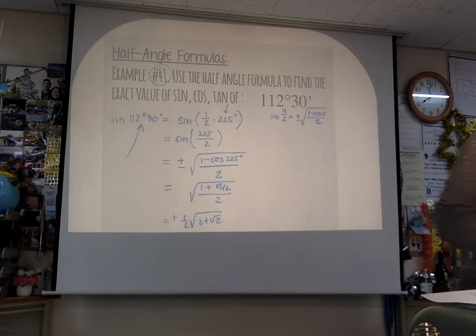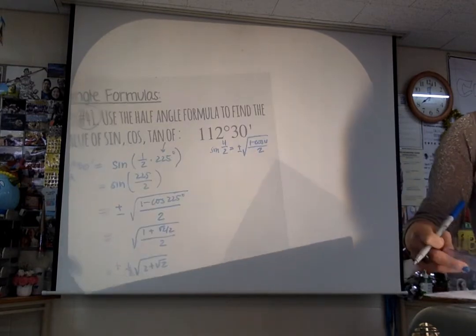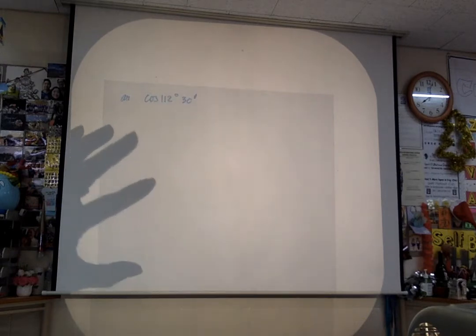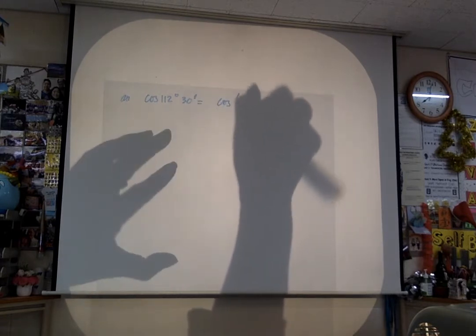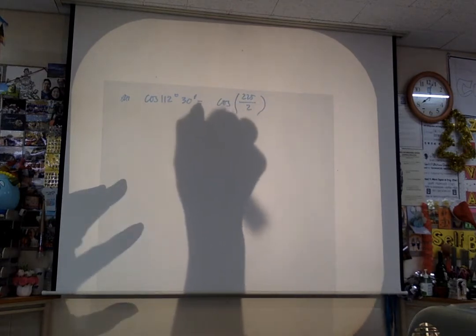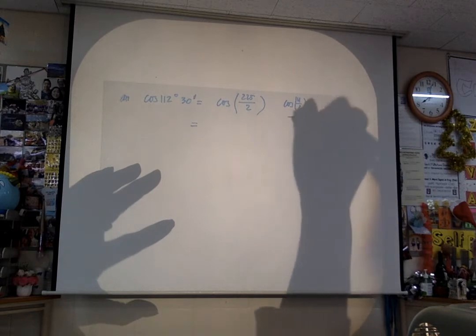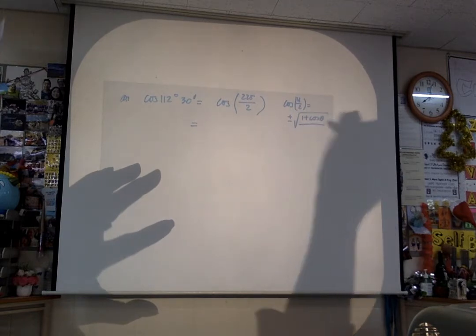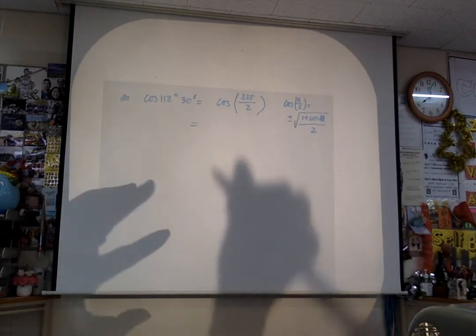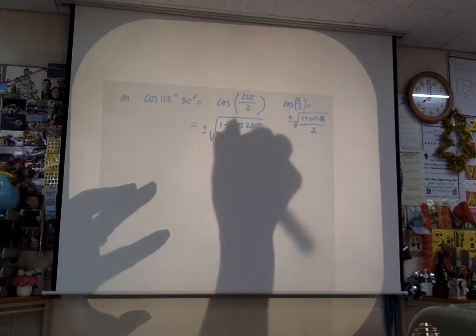Now stop the video and try cosine and tangent on your own using the half-angle formula. For cosine of 112 degrees and 30 minutes, you're going to use cosine of 225 over 2. The cosine half-angle formula is: cosine of u over 2 equals plus or minus square root of 1 plus cosine u, all over 2. So apply that: plus or minus square root of 1 plus cosine of 225 degrees, all over 2.